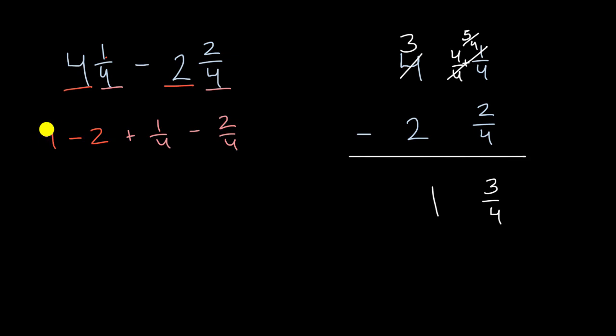So what we do is we take some of that value from the four. Instead of four, we could rewrite that as three plus four-fourths. That's the same thing as four. And of course, you have minus two plus one-fourth minus two-fourths.